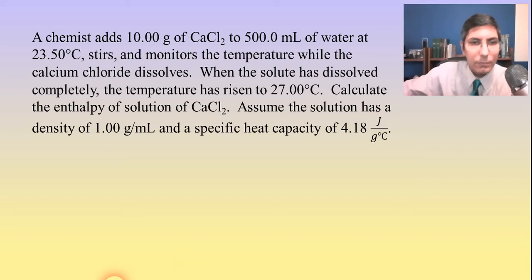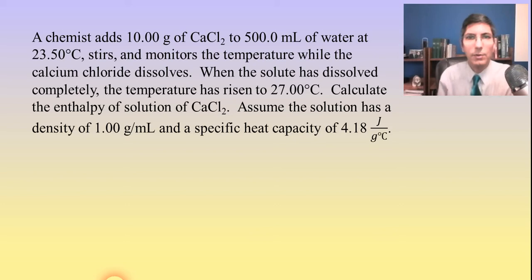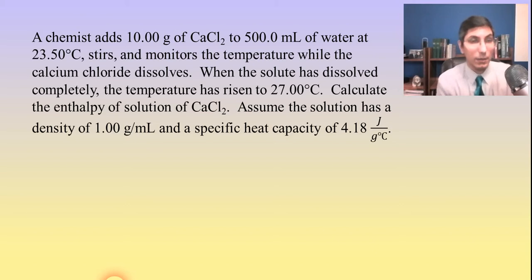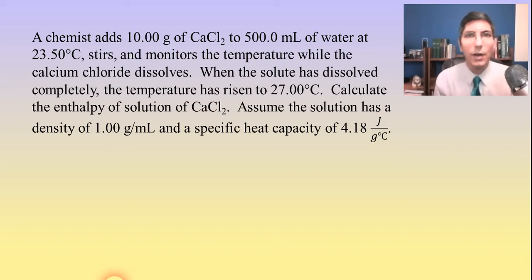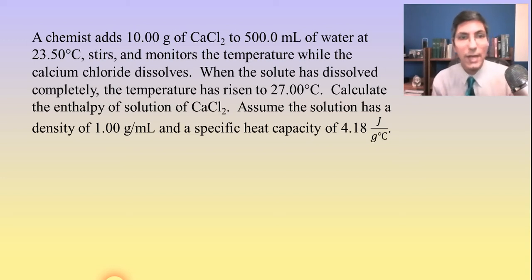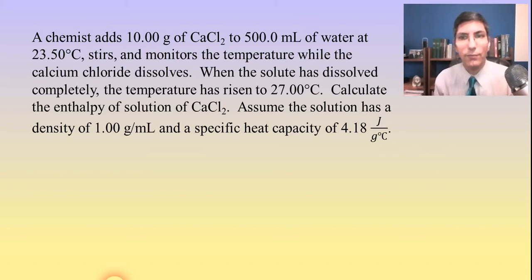Here's our first example. We have a case where a chemist adds 10.00 grams of calcium chloride to 500.0 milliliters of water at 23.50 degrees Celsius, stirs, and monitors the temperature while the calcium chloride dissolves. When the solute has dissolved completely, the temperature has risen to 27.00 degrees Celsius. Calculate the enthalpy of solution of calcium chloride. Assume the solution has a density of 1.00 grams per milliliter and a specific heat capacity of 4.18 joules per gram degree Celsius.